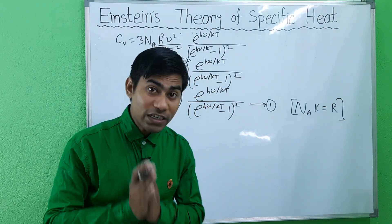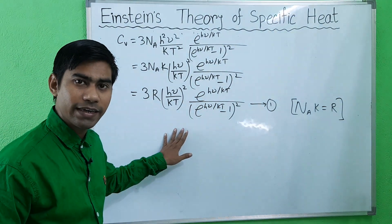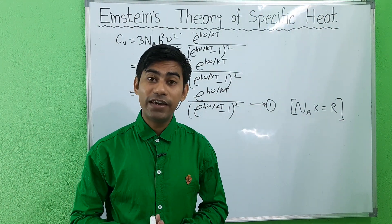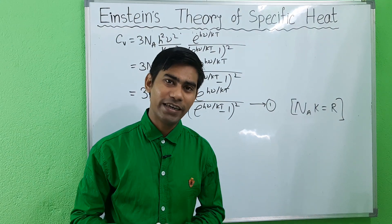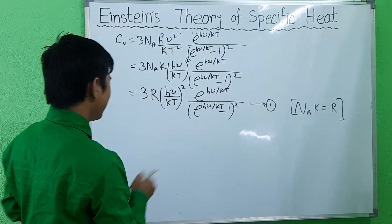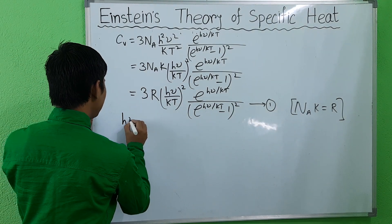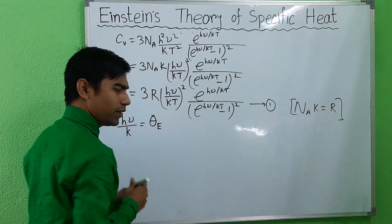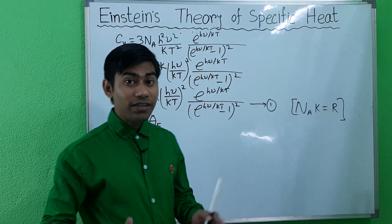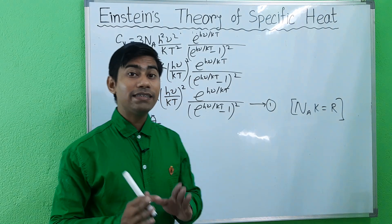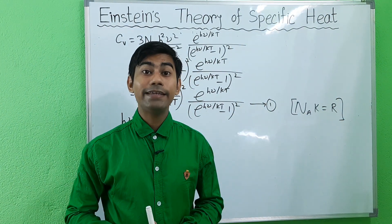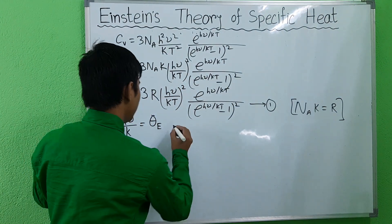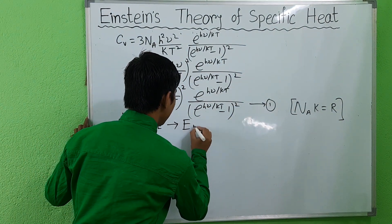This is the molar specific heat of the solid and is the well-known Einstein's equation for the specific heat of a solid. Now let hν/kT = θ_E, where θ_E, having units of temperature, is a characteristic temperature known as the Einstein temperature.